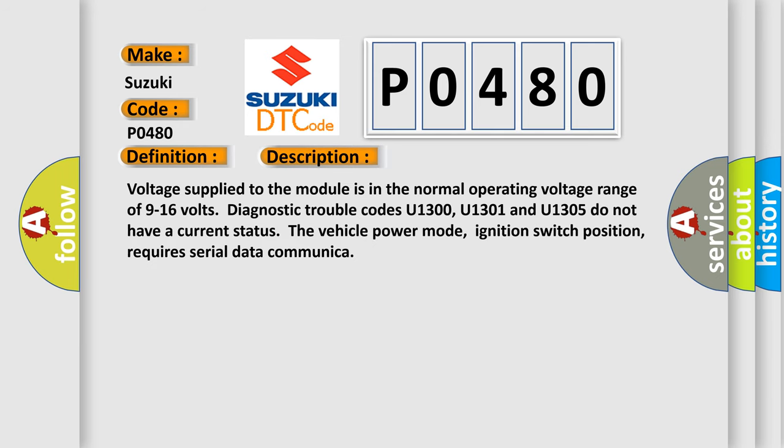Voltage supplied to the module is in the normal operating voltage range of 9 to 16 volts. Diagnostic trouble codes U1300, U1301, and U1305 do not have a current status. The vehicle power mode, ignition switch position, requires serial data communication.